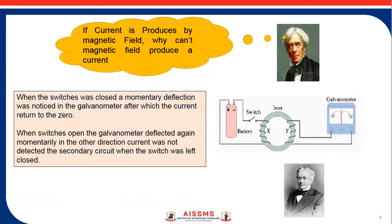A coil is connected with a galvanometer, and this series combination is connected to a battery. When the switch was closed, a momentary deflection was noticed in the galvanometer, after which the current returned to zero. When the switch was opened, the galvanometer deflected again momentarily in the other direction.